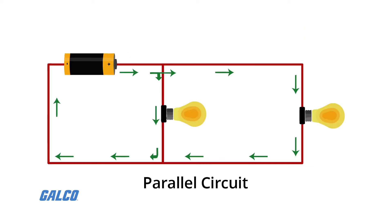In parallel circuits, each light bulb has its own circuit, so all but one light could be burned out, and the last one will still function.